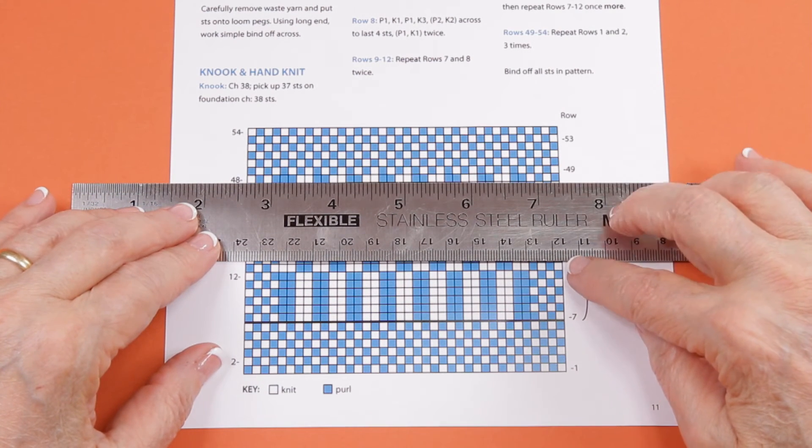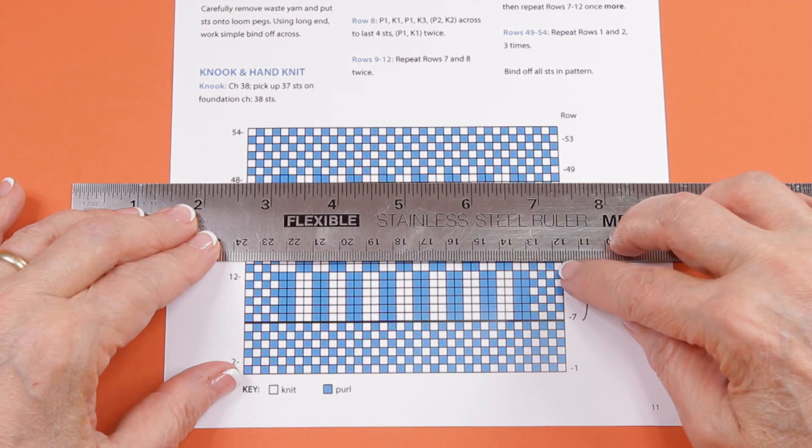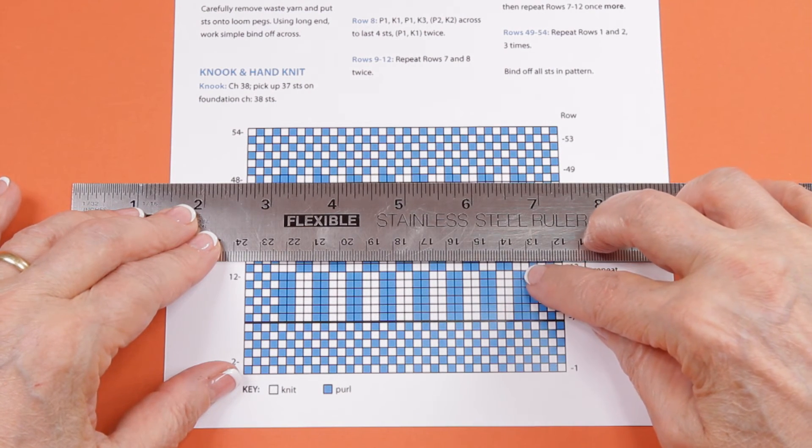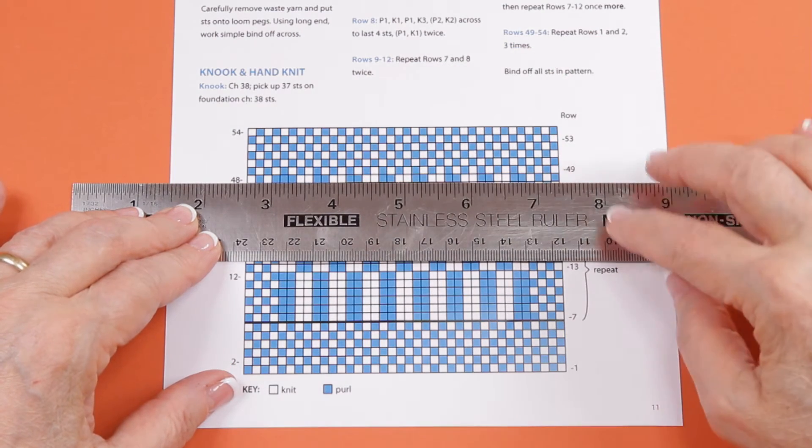So if we were to look at this row right here, you would knit one, purl one, knit one, purl one, knit two, purl two, and you would follow this row across.